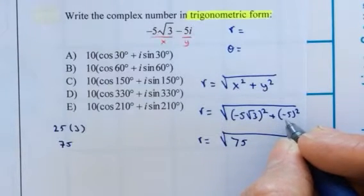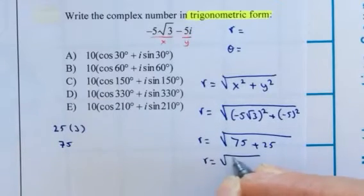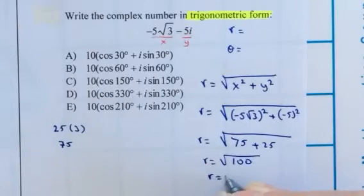If I simplify this, this negative 5 squared is 25. So therefore, r equals the square root of 100. r equals 10.